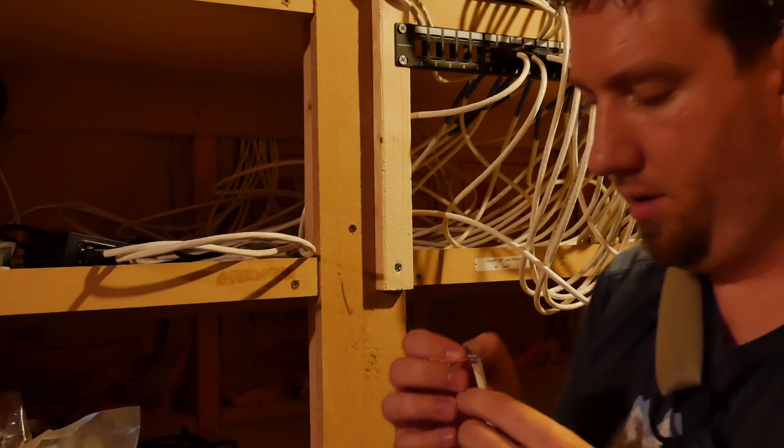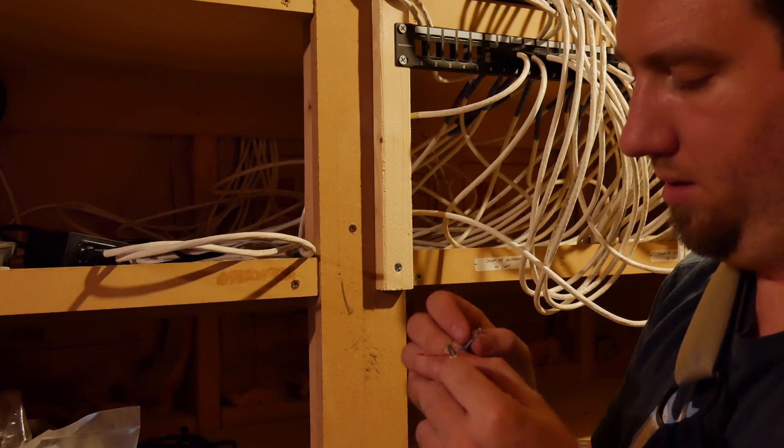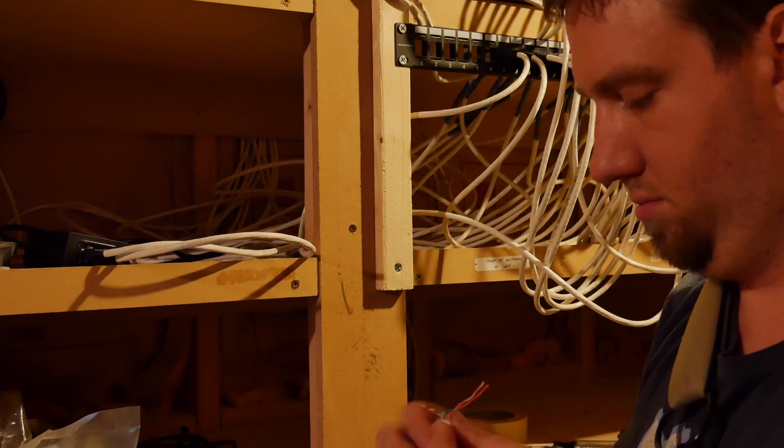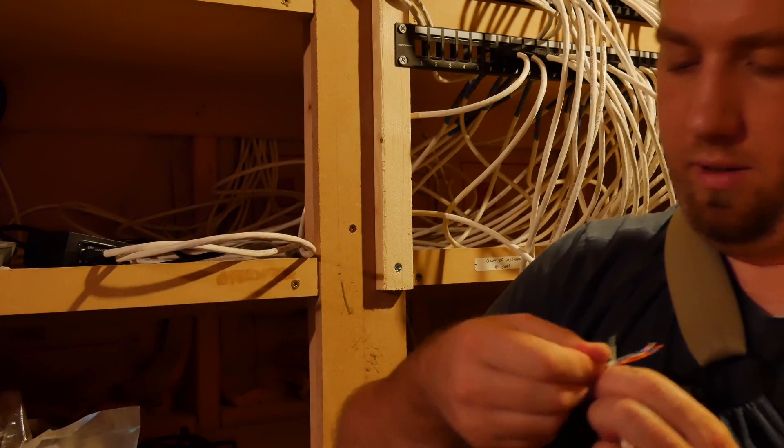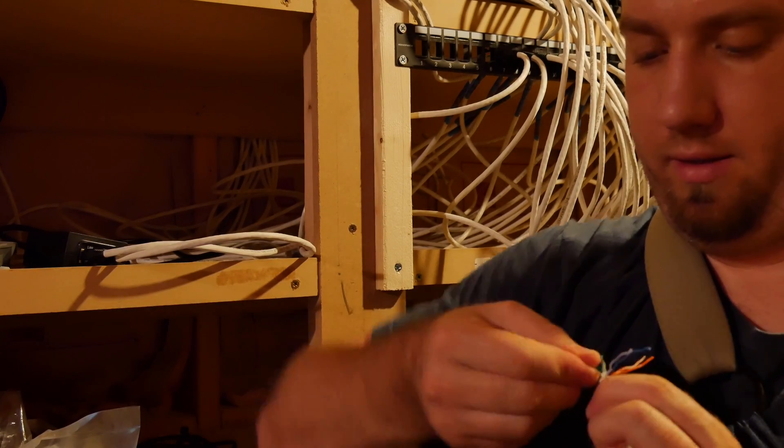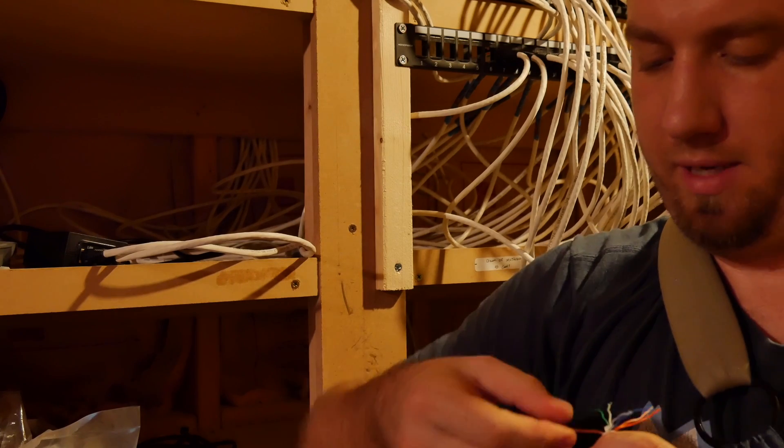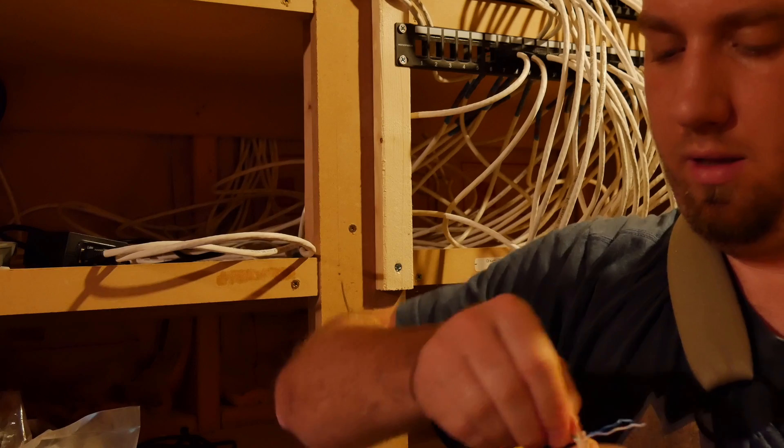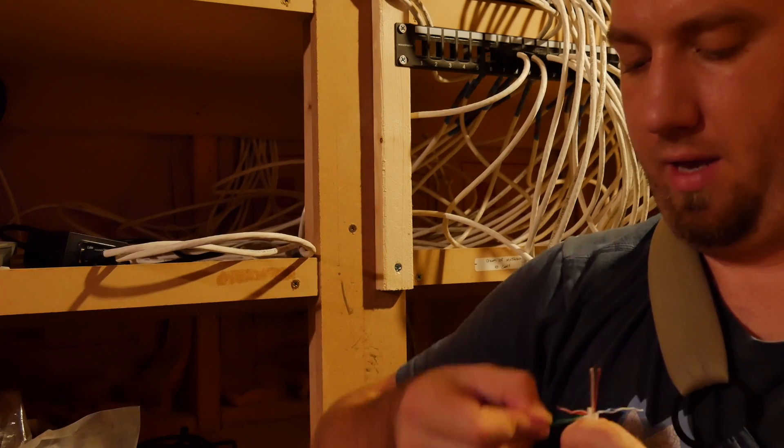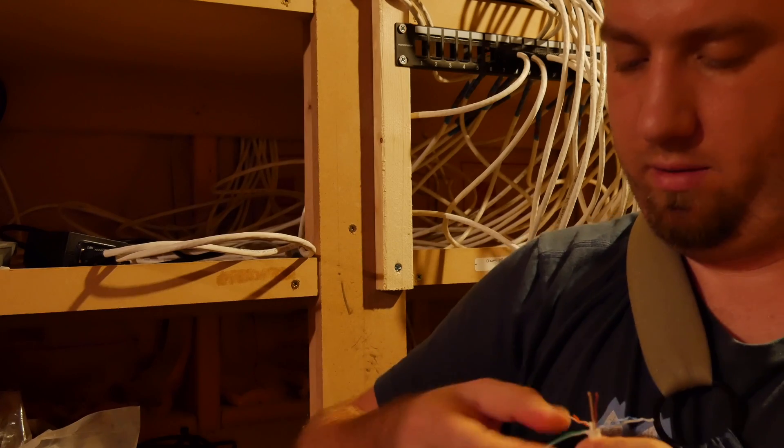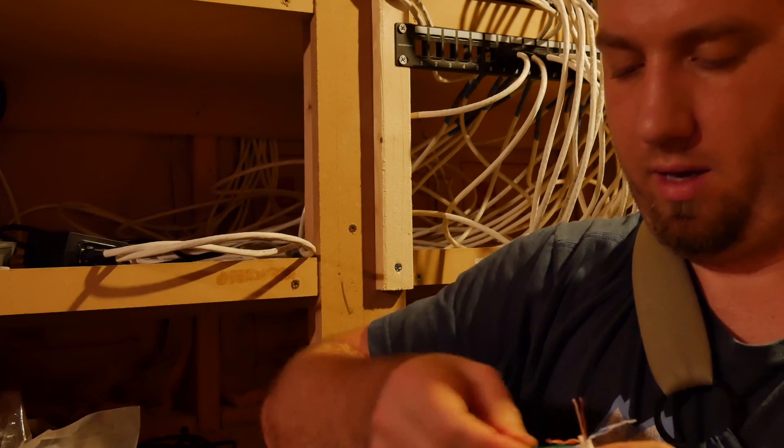And then what you want to do is start untwisting all of them. And then what I do is I just grab the little pairs and then I pull my fingers across them and try and straighten them out as much as possible because you're going to be pulling that little clear doodad over the cables in just a few minutes. So straighten them out as best as you can, try and get all the little kinks out.